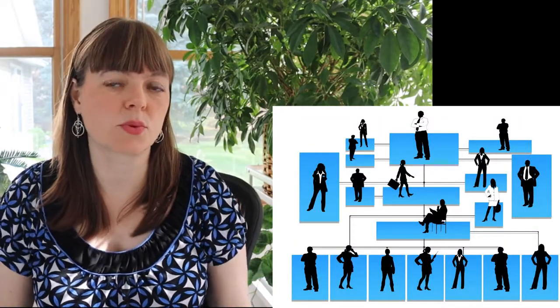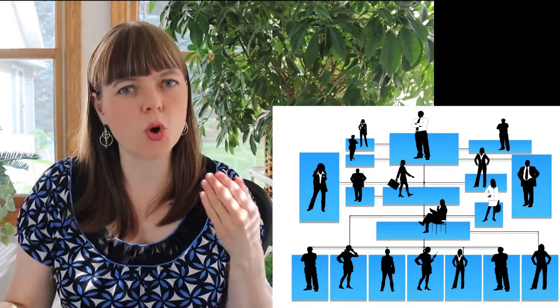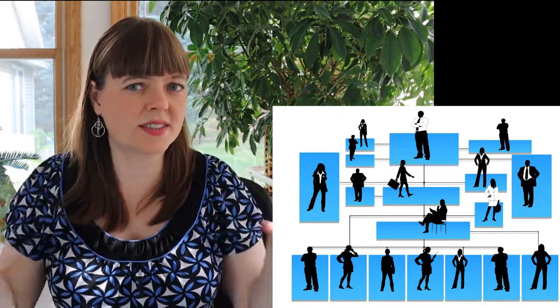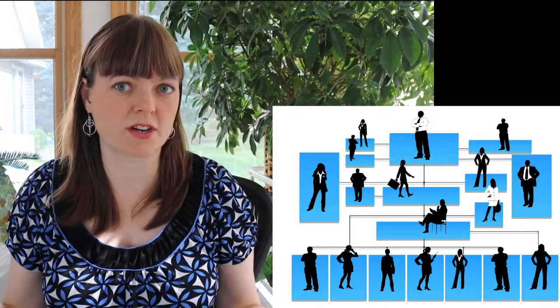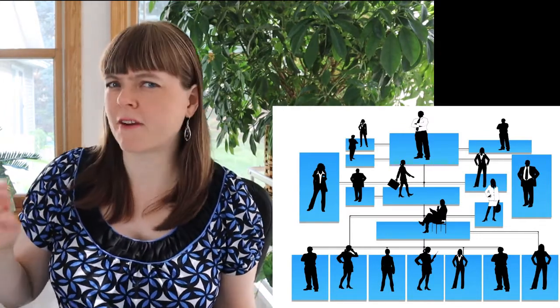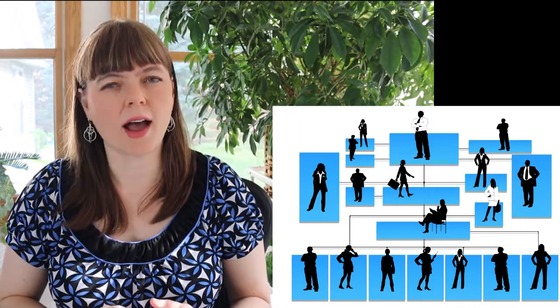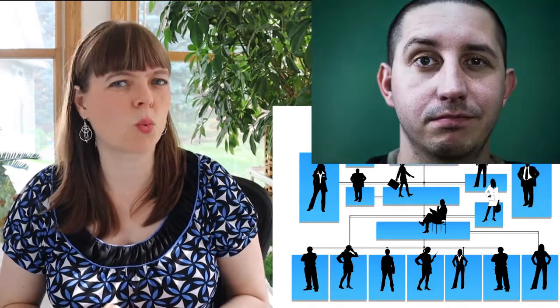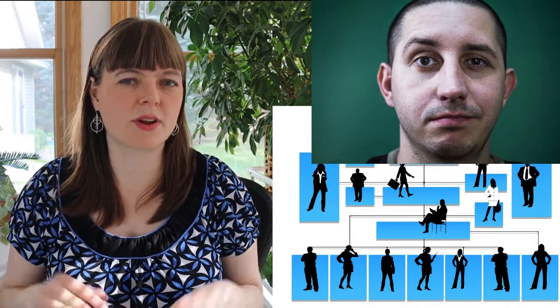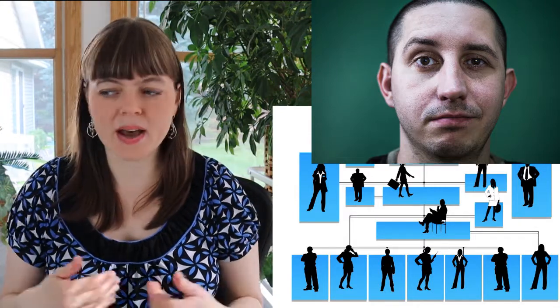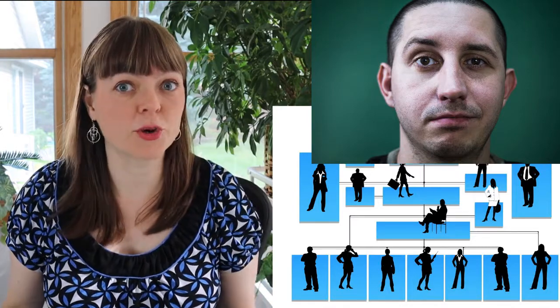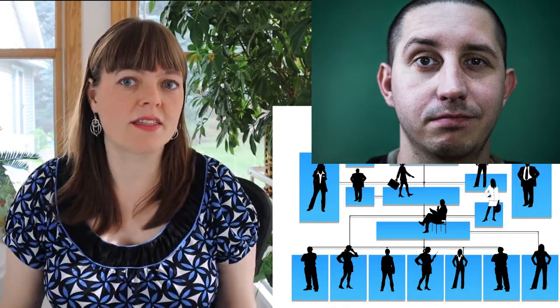The basic idea of the blockchain corruption system I'm going to describe is that a lot of times, the evidence that corruption is going on is distributed across many employees within an organization. There may be no one employee who sees the full picture of the degree of corruption. Rather, each employee may see a few suspicious emails or have a few meetings where something weird is said that raises their ethical hackles, but because they don't have the full bird's eye view, they may dismiss it.